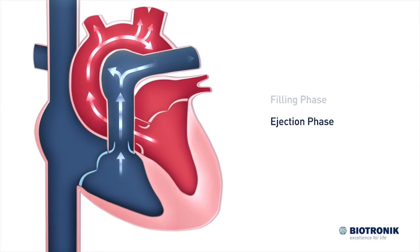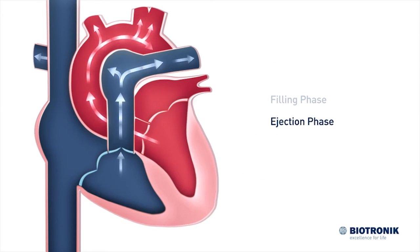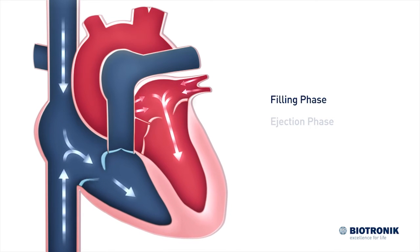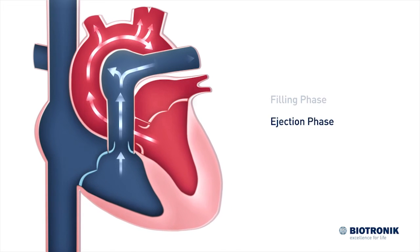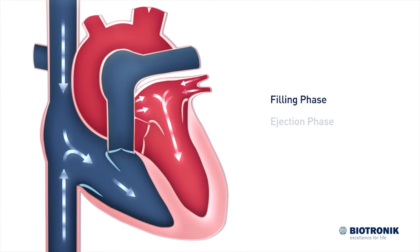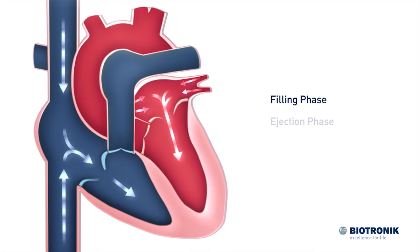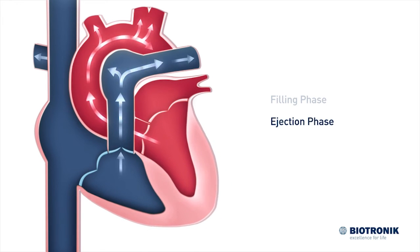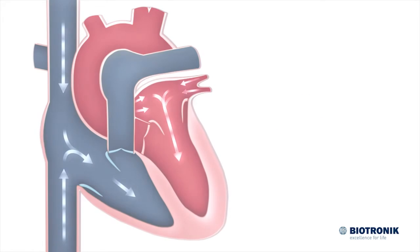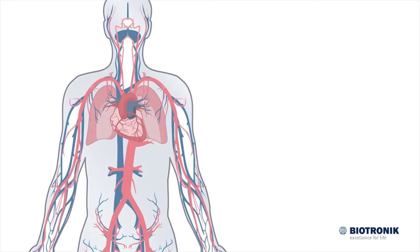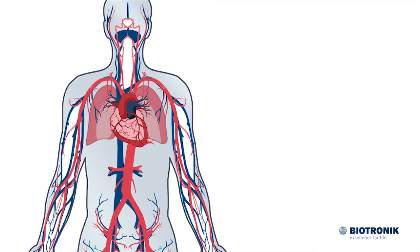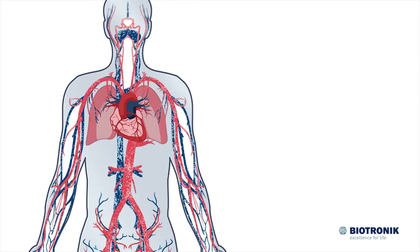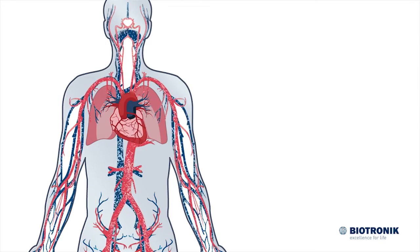With every filling and ejection phase, the heart valves ensure the blood is pumped into the body's circulatory system. This way, the heart drives the bloodstream and supplies the cells of our bodies with oxygen and nutrients continuously.